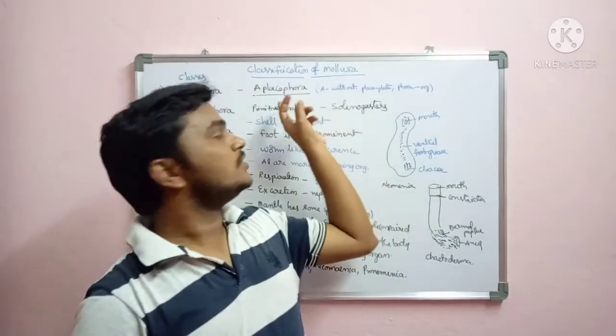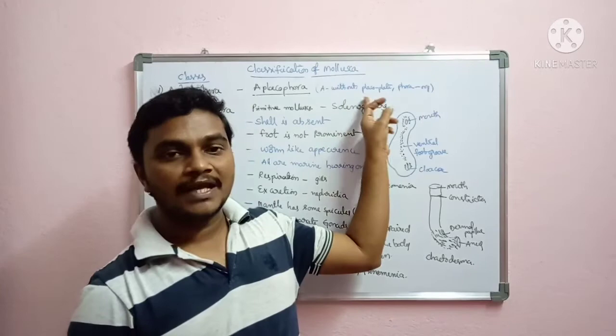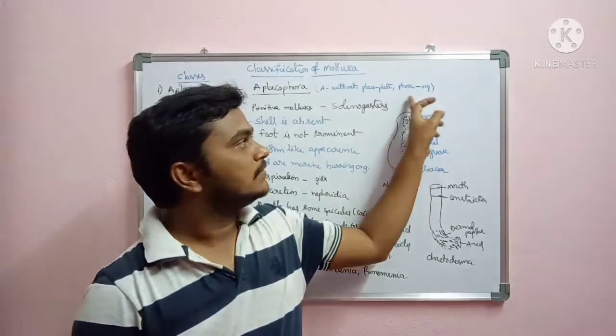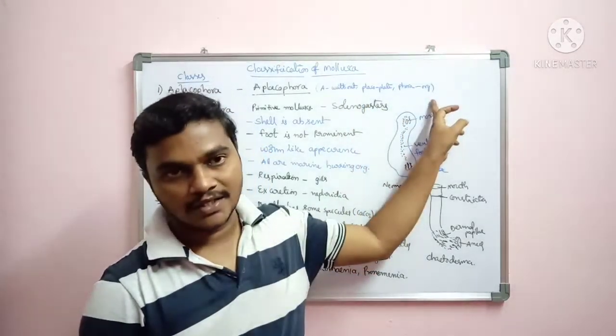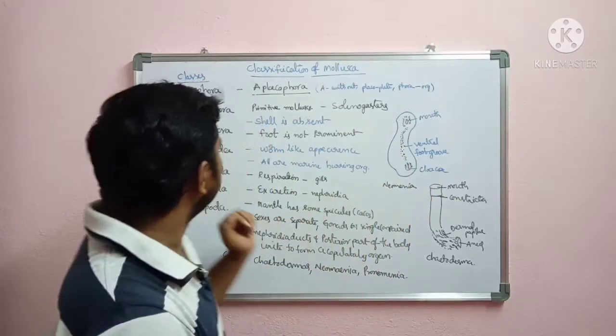These are the peculiar characters of the Aplacophora. In the name: 'A' means without, 'placo' means plate (that means shell), and 'phora' means organisms.